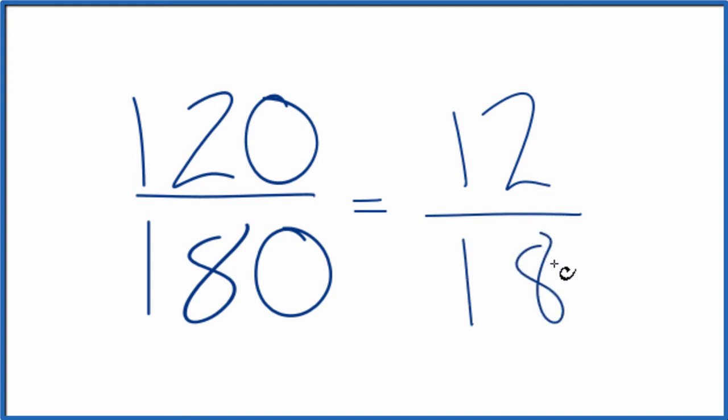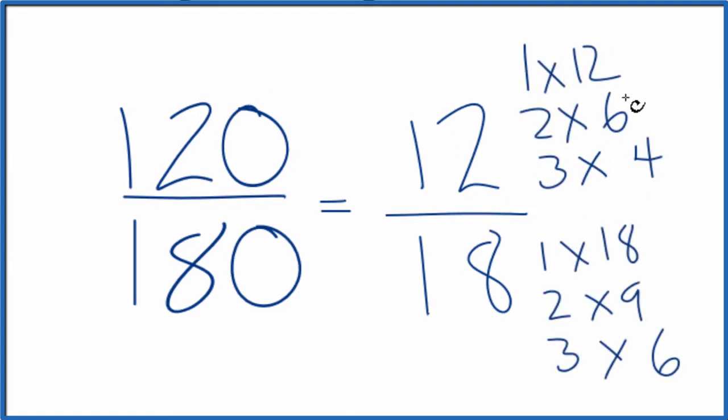This is a little bit easier to work with. So I can write the factors of 12 and 18. They look like this. And so I'm looking for the greatest common factor for 12 and 18, and that looks like 6. 6 is the greatest common factor.